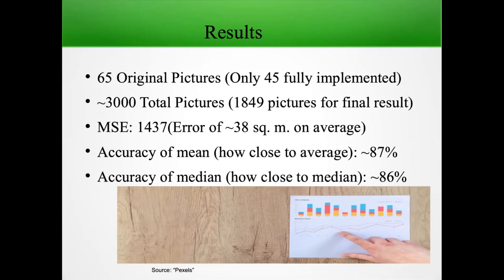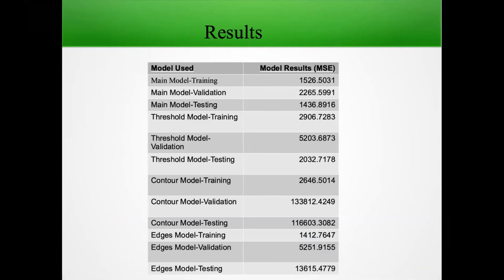And the optimized result I got for testing was 1437 mean squared error, which is approximately an error of 38 square meters on average. So basically it was within that margin of error, which is still a little too big for what I was looking for for a lawn care company. That's still somewhat of a big error, but that was actually one of the best results I got. And as you can see for accuracy of the mean, the mean was 87% close to the average. It got 87% of the way to the correct answer essentially. And the median is also 86, approximately 86%. Here's some of the results and shows some of the threshold and contouring and the canny edge algorithms. And they generally weren't as good as just the optimized convolutional neural network model.